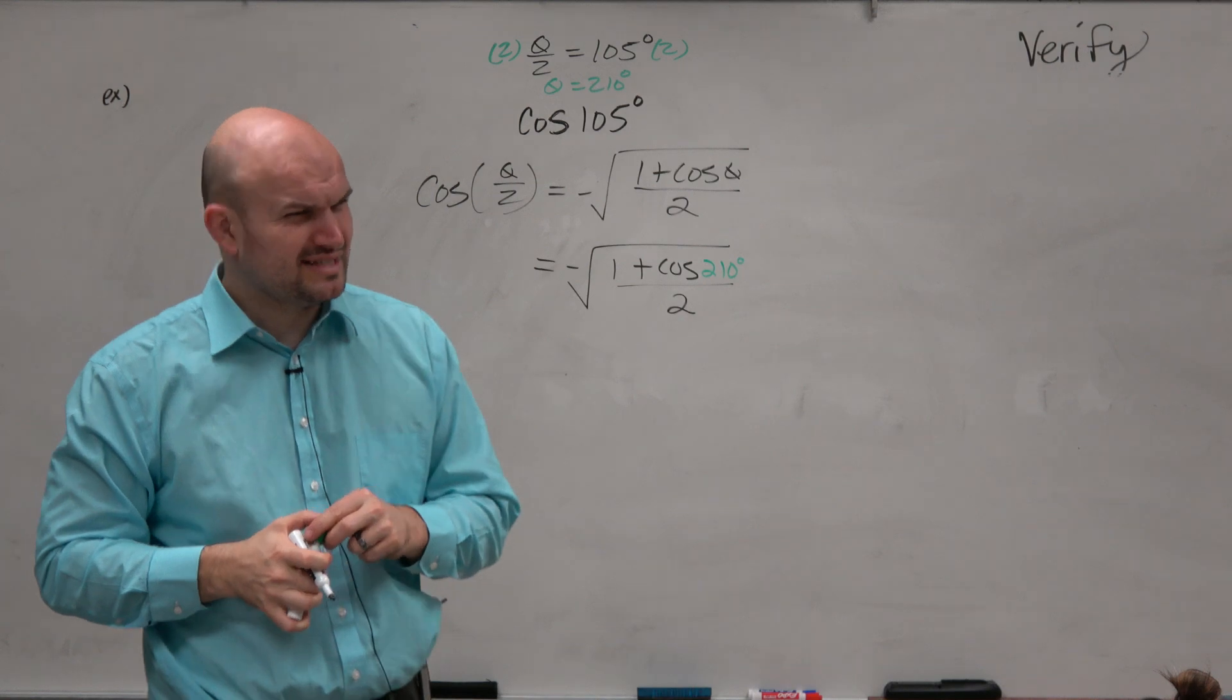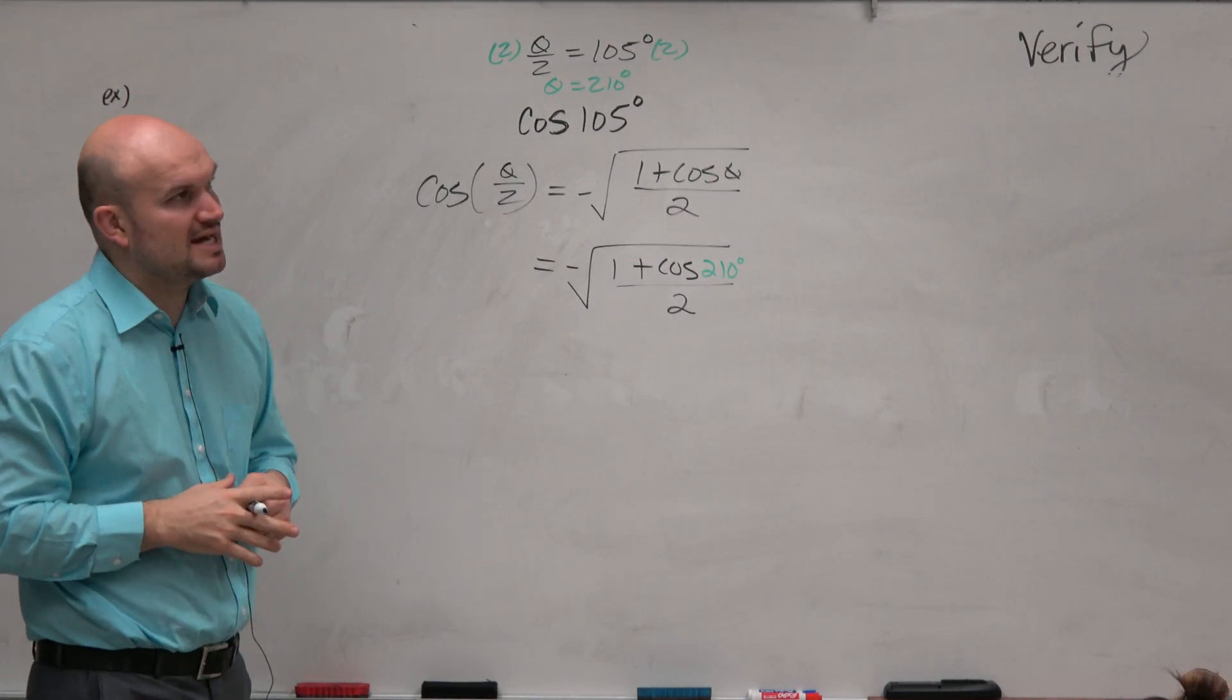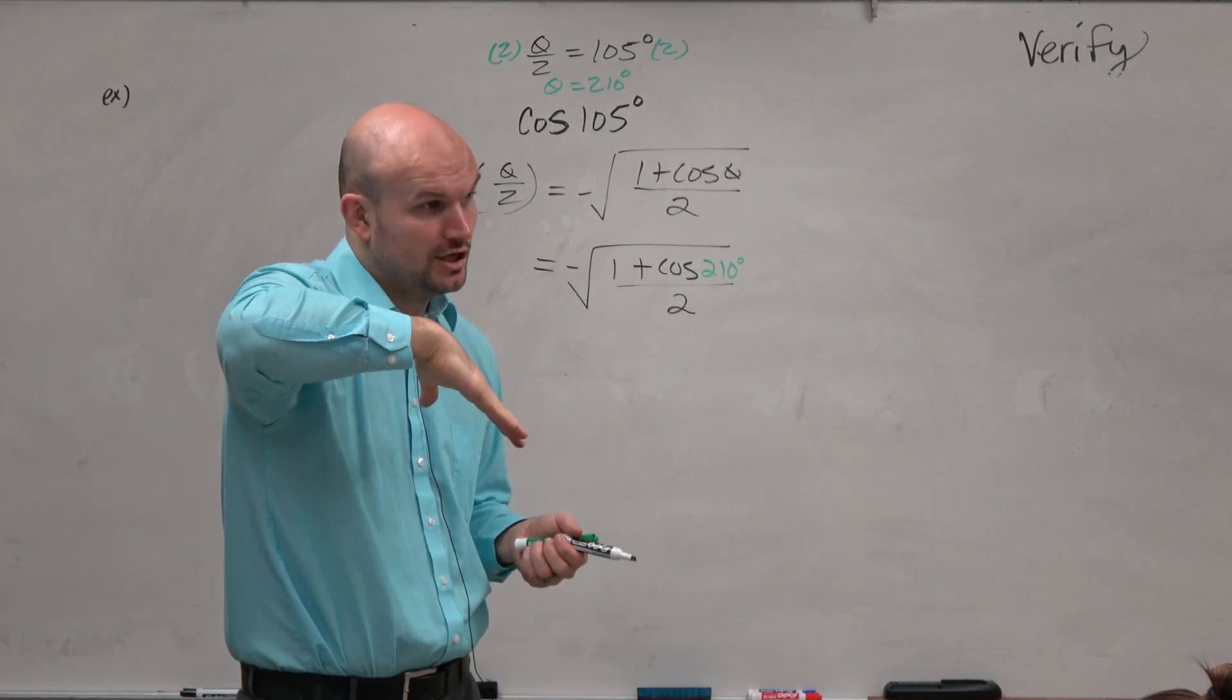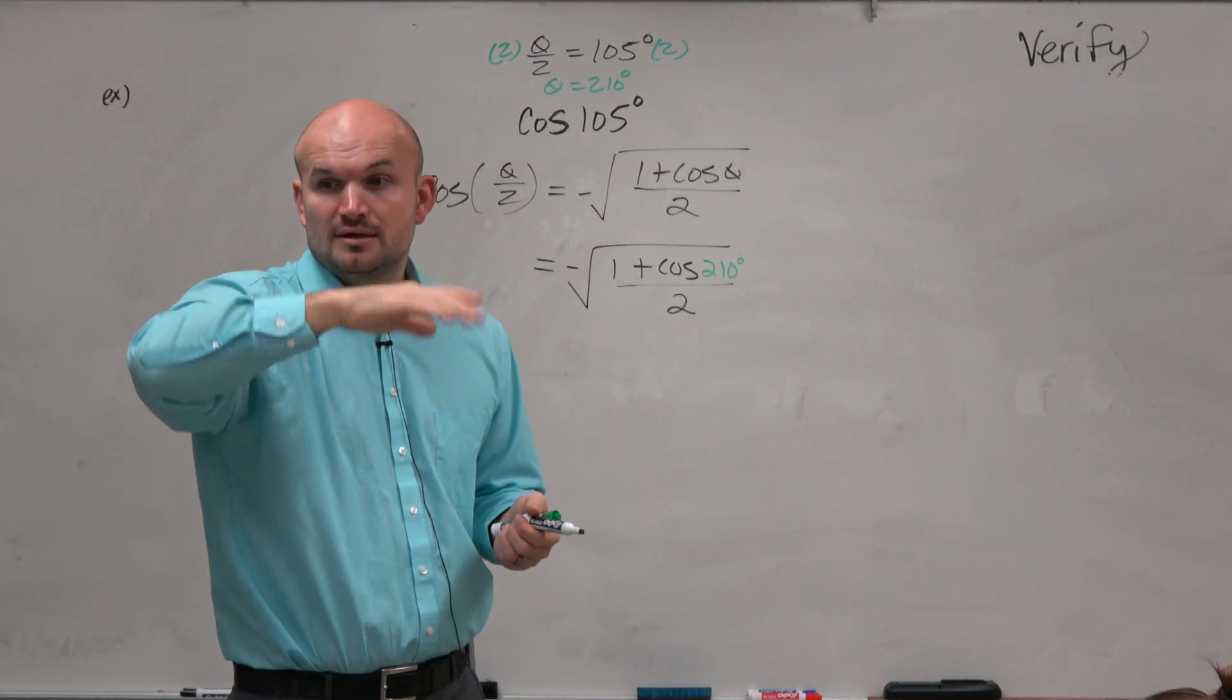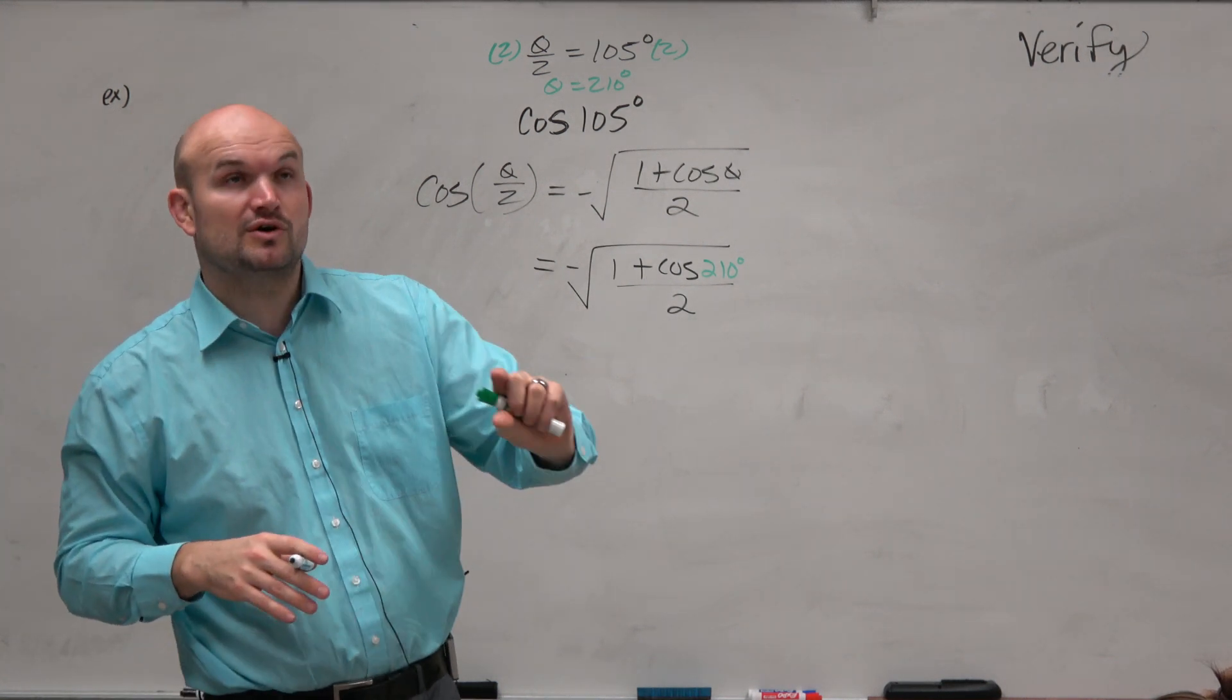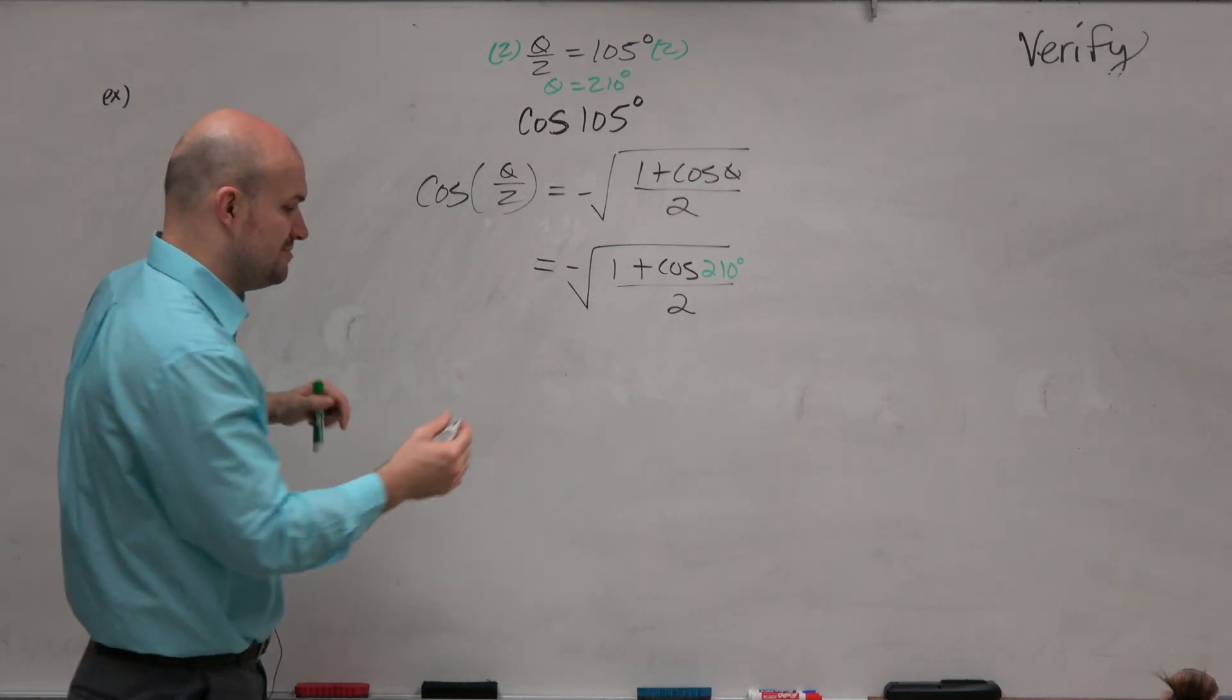All right, and then we haven't really dealt with degrees as much, so let's go and practice. Cosine 210 degrees, that's going to be in the third quadrant. That's 30 degrees over 180 degrees, right? So therefore, the reference angle is 30 degrees. So cosine of 30 degrees is square root of 3 over 2. But since it's in the third quadrant, it's going to be a?